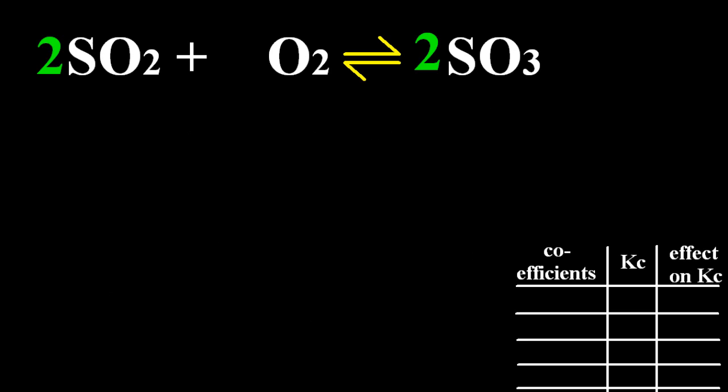Let's work it out. This is the production of sulfur trioxide, which is used to make sulfuric acid. My equilibrium concentrations are written there: 1M, 2M, 4M. Those are going to stay the same. They're independent of any messing about I do with the equation's coefficients.